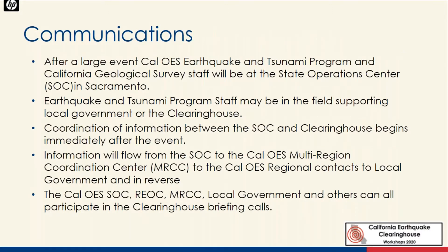For a large event, Cal OES Earthquake and Tsunami Program and California Geological Survey staff will be at the State Operations Center. Our staff may also be in the field supporting local government or the clearinghouse. Coordination between the SOC and the clearinghouse begins immediately after the event. Information flows from the State Operations Center to the Cal OES Multi-Region Coordination Center (MRCC), to Cal OES regional contacts, and down to local government — and in reverse when information comes back up. The SOC, REAC, MRCC, and local government can all participate in clearinghouse briefing calls.